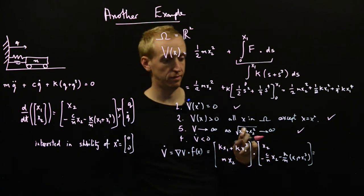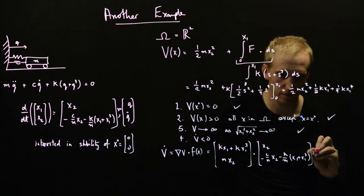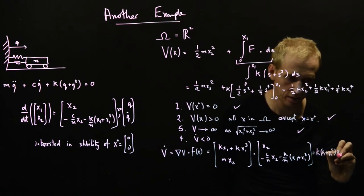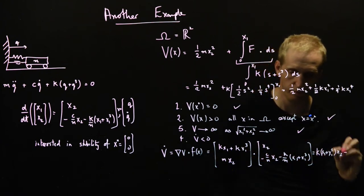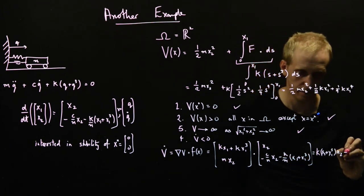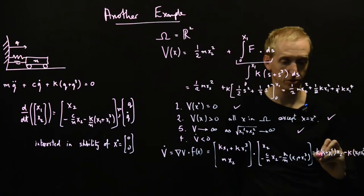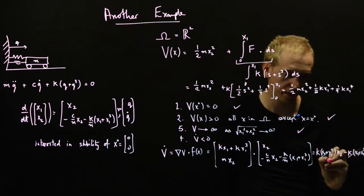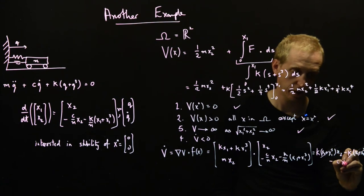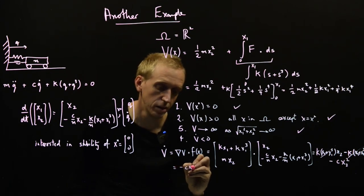Let me set things up properly. And now we need to put in our expression for f(x). And here we have x2, minus c over m x2 minus k over m (x1 plus x1 cubed). We multiply out this dot product. What are we going to get? Maybe you're already starting to see what's going to happen. But we get, here we have k(x1 plus x1 cubed)x2. And for this one, we have minus this term here, mx2 multiplied by this. This is k(x1 plus x1 cubed) times x2. So that's just going to cancel with that. And then we also get minus c x2 squared. So this whole thing, V dot is equal to minus c x2 squared.